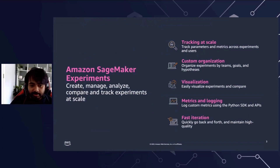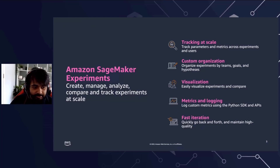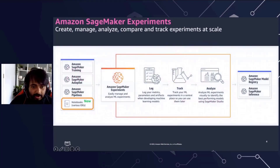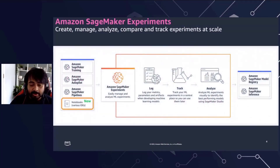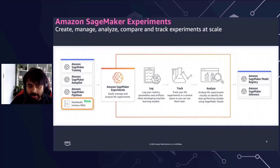Amazon SageMaker Experiments is a capability of Amazon SageMaker which lets you create, manage, analyze, and compare your machine learning experiments at scale with ease. SageMaker Experiments is now a part of the core SageMaker SDK, which means you no longer have to install any additional packages to log and track your machine learning experimentations.